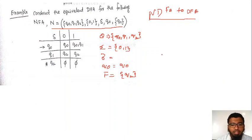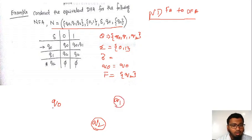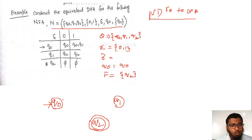So here you can draw the state diagram. How many states? q0, q1, and q2 — we have three states. From these three, which one is the initial state? q0 is the initial state. And which one is the final state? The final state is q2, as per the NFA table.